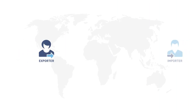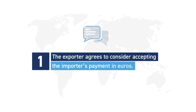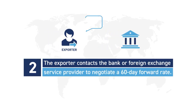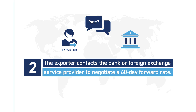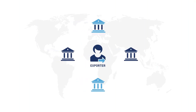In this follow-up example, our U.S. exporter to Europe decides to negotiate a forward contract by taking several steps. First, the exporter agrees to consider accepting the importer's payment in euros. Second, the exporter contacts the bank or foreign exchange service provider to negotiate a 60-day forward rate to lock in the exchange rate. If the rate is unacceptable, the exporter can check with other banks or service providers, as terms and rates can vary. There are no standard fees for forward contracts.